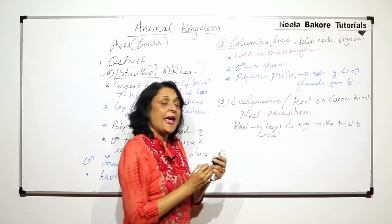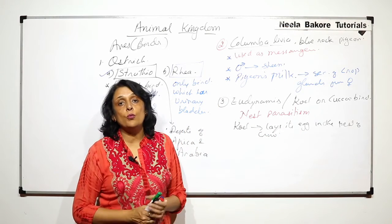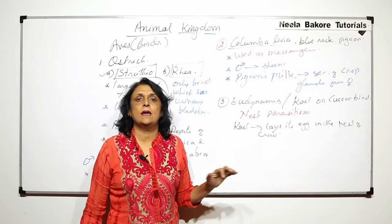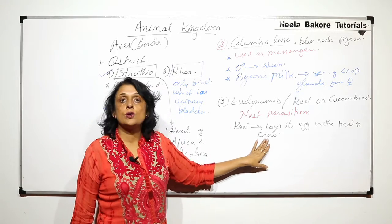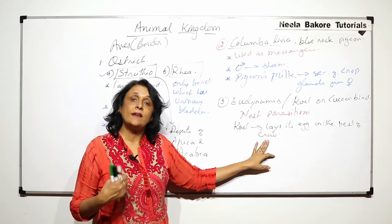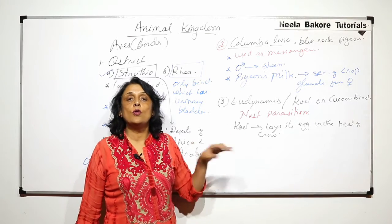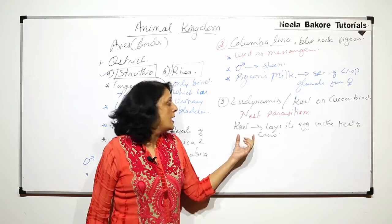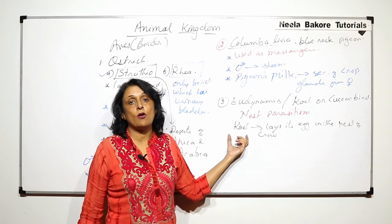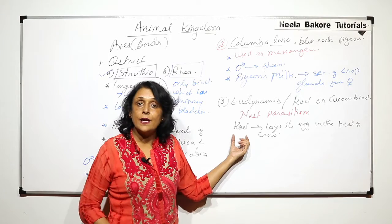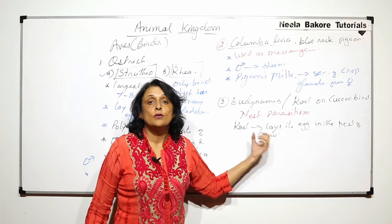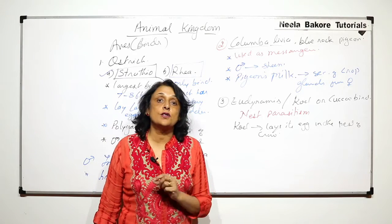Nest parasitism is the cuckoo bird lays its eggs in the nest of crow. So, the eggs of crow and cuckoo bird, they are pretty much same, same size, same color. So the crows take care of their own eggs as well as the eggs of the cuckoo bird. And cuckoo bird is moving around and the eggs have been taken care of or rather are taken care of by crows. The crows act as their foster parents.